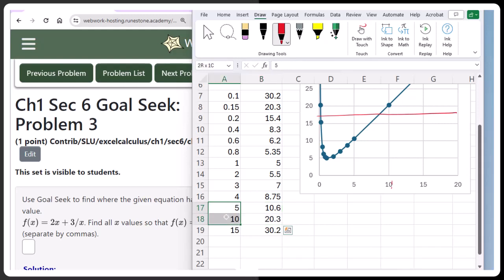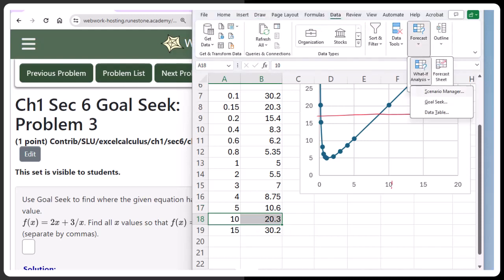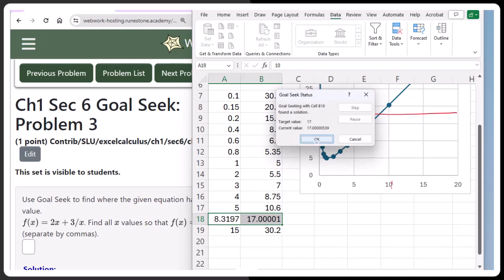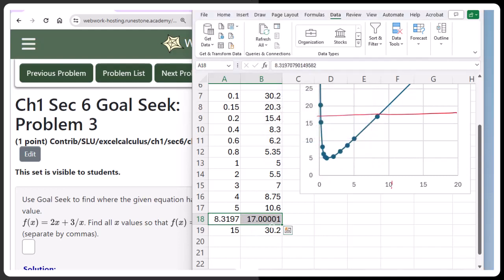The value of 17 happens somewhere between 10 and 20, which means that X solution would be somewhere in between 5 and 10. Now let me search on it using this row. Data, forecast, what if, goal seek. Set the Y-coordinate cell equal to a value of 17 by changing the X-coordinate cell and keep that solution. Notice again, if there's a little bit of error, it isn't exactly 17, so this X value isn't the exact solution, but it's close enough for what we need.